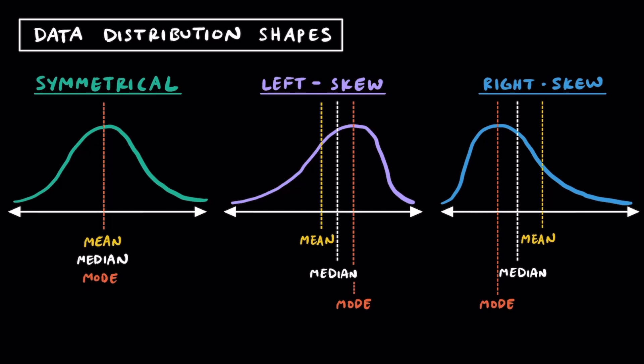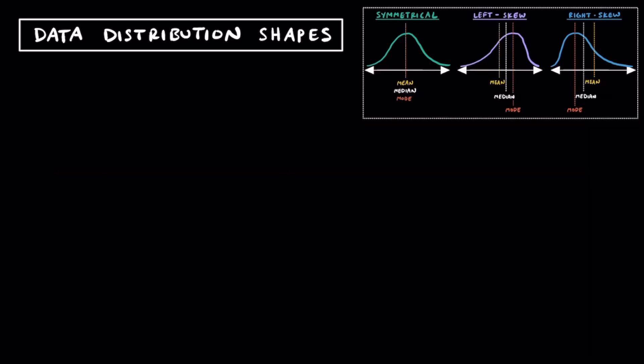An important concept from these diagrams: when looking at symmetrical data, most of the data is concentrated in the middle with less and less above and below as you go farther away. When you look at left skewed data, most of the data is concentrated to the right side with less and less to the left of it. And finally, when looking at right skewed data, most of the data is concentrated to the left with less and less to the right. Now that we've gone over some background of these types of shapes, let's try some examples together.